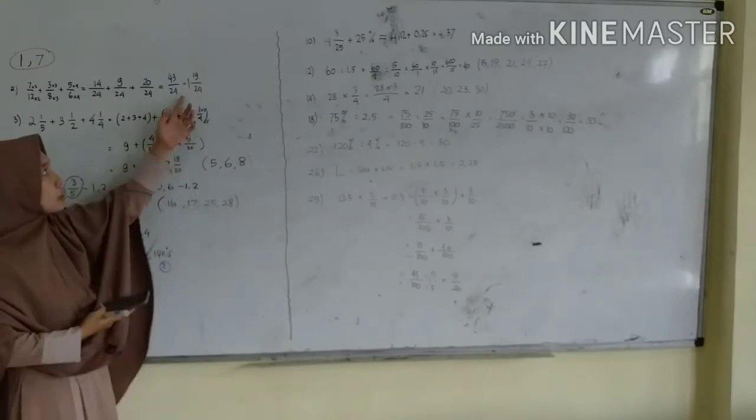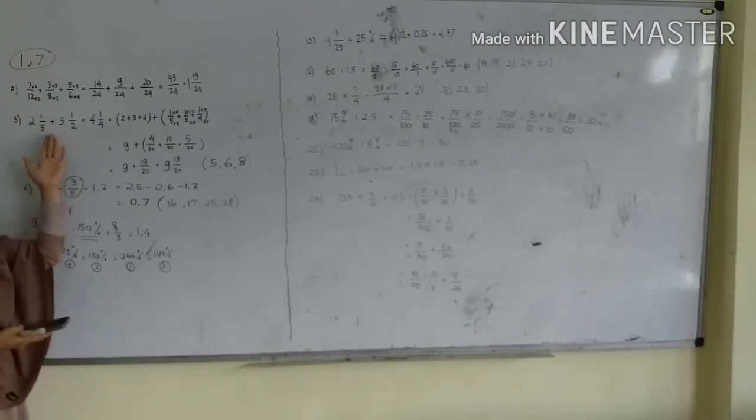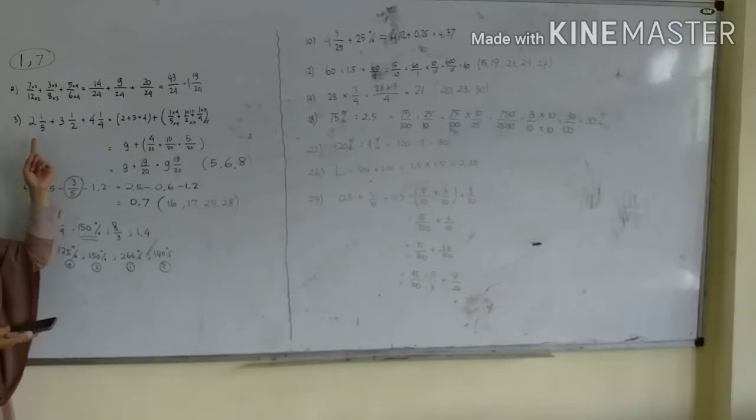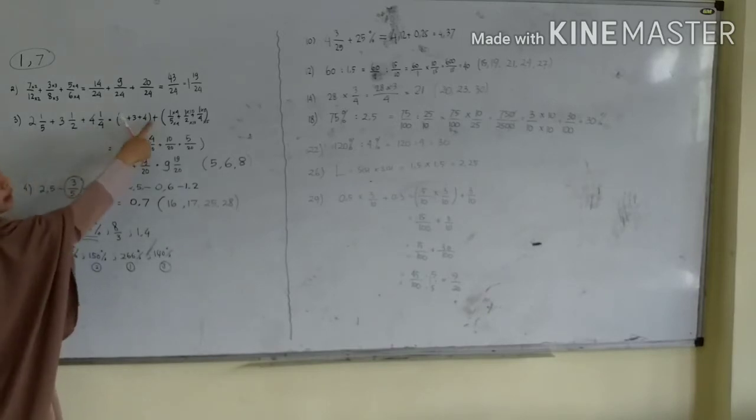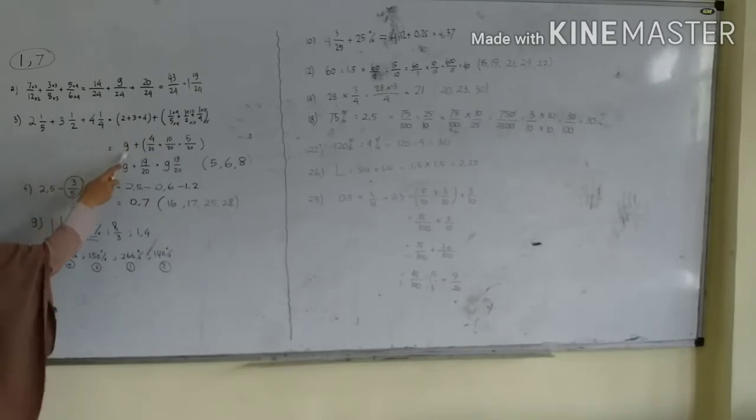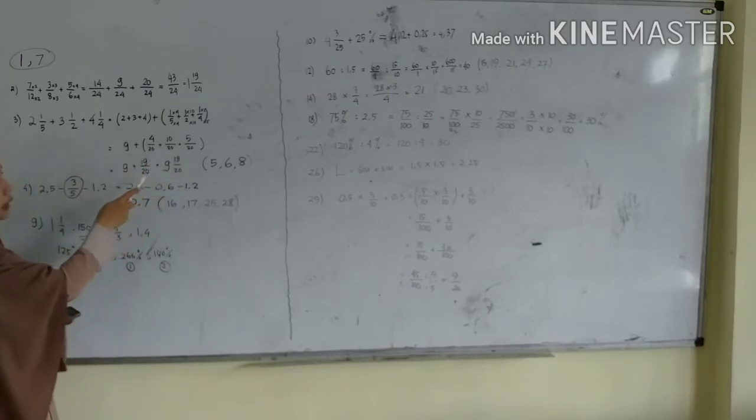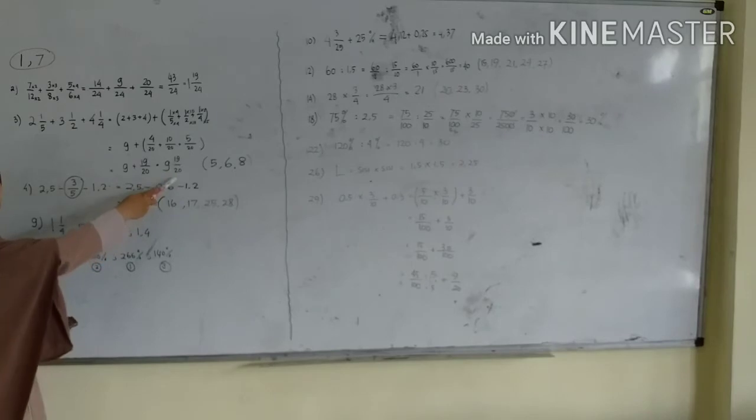Nomor 3 sebenarnya sama dengan nomor 2, penjumlahan pecahan yang penyebutnya berbeda. Tetapi nomor 3 kenapa ditulis lagi? Karena disini ada pecahan campuran. Pecahan campuran, maka bagaimana caranya? Silahkan dikumpulkan dulu bilangan yang utuh dan bilangan pecahannya juga dijadikan satu. Kalau sudah, ini ditambahkan. Yang ini pecahan campuran karena nomor 2 yang berbeda maka disamakan dulu penyebutnya menjadi per 20.